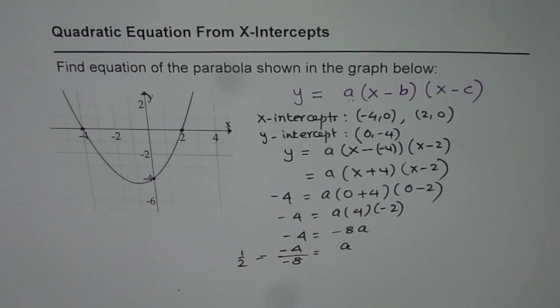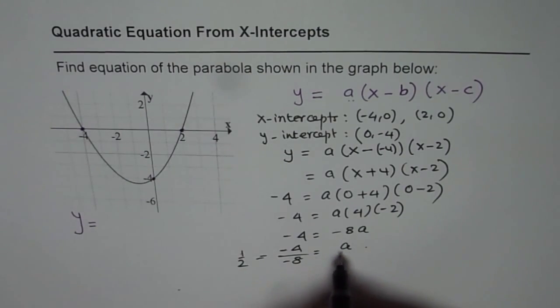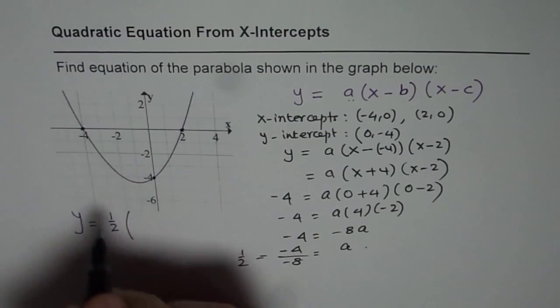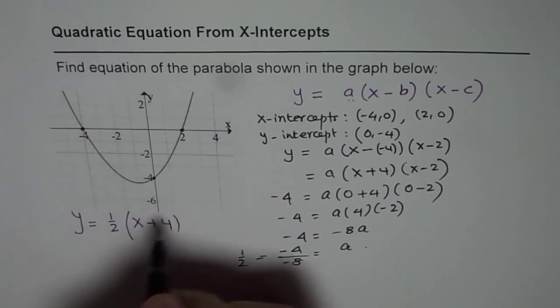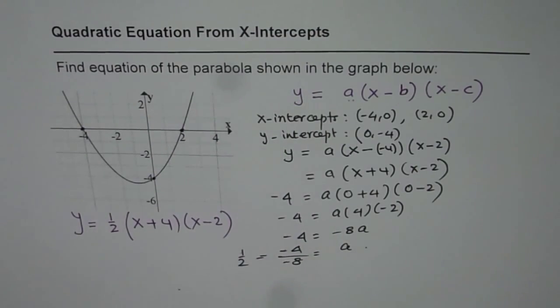Therefore we can now write down the equation as y equals half times x plus 4 times x minus 2. So that is how you can get the equation of a parabola using x-intercepts.